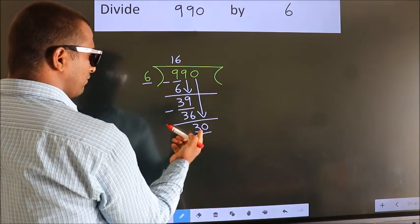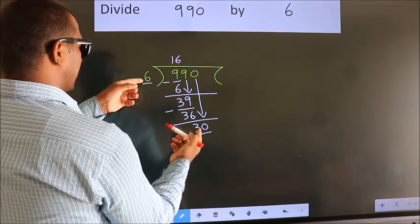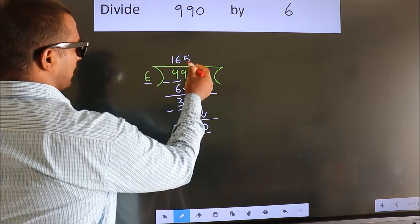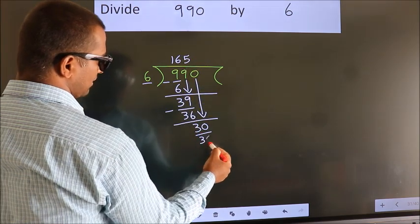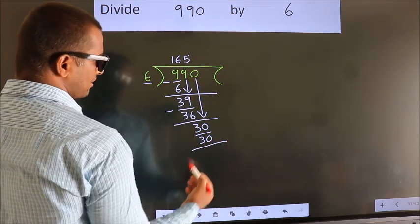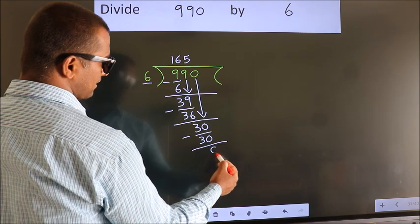When do we get 30? In 6 table, 6 fives, 30. Now we subtract. We get 0.